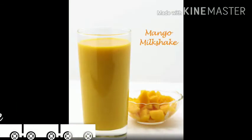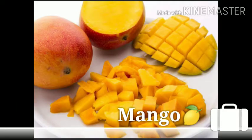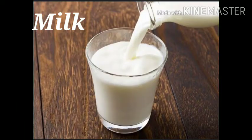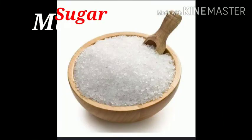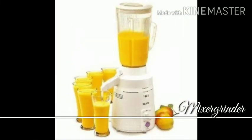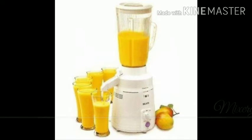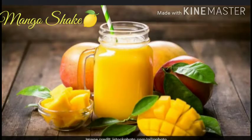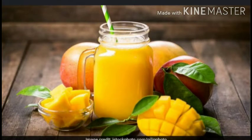When you make mango milkshake, you put mango, milk, and sugar in the mixer grinder. These things are called input. The things which we get from a machine after it works are known as output. In the above example, the mango shake given by the mixer grinder is the output.